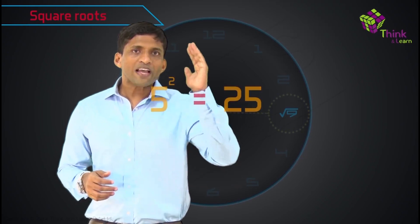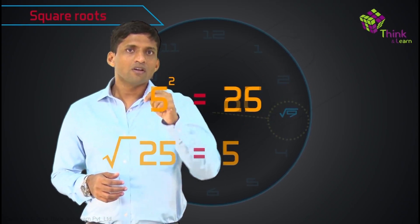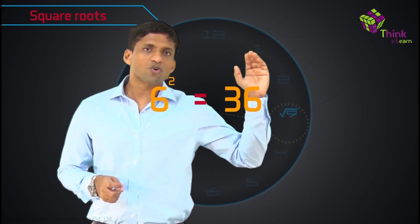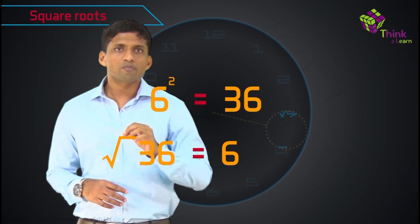5 square is 25, so square root of 25 is 5. 6 square is 36, square root of 36 is 6. So all of you know what is meant by square root.